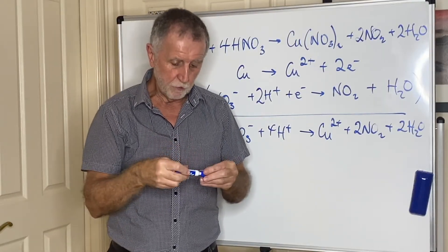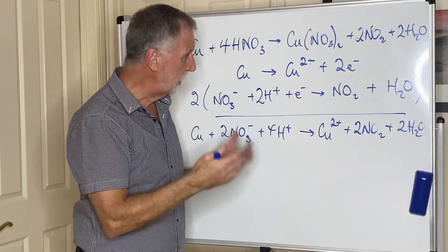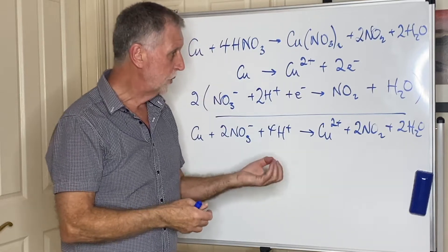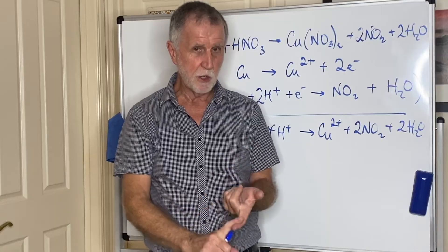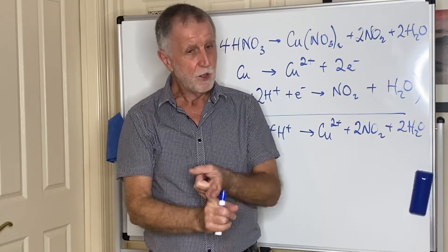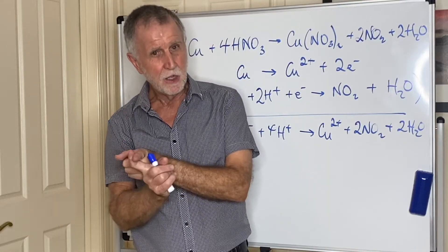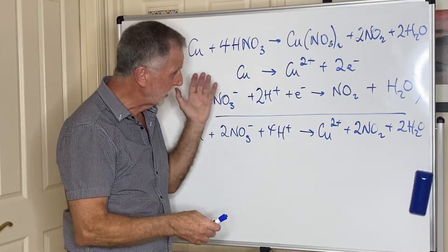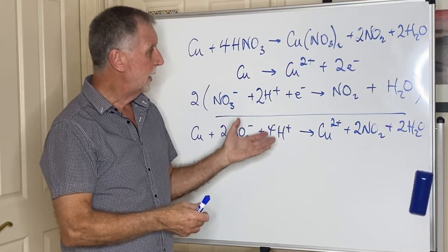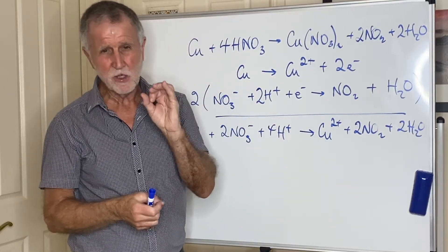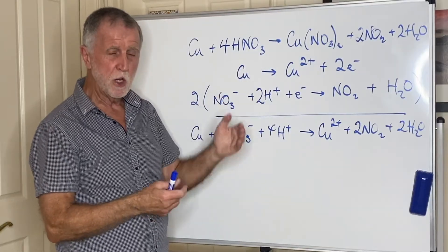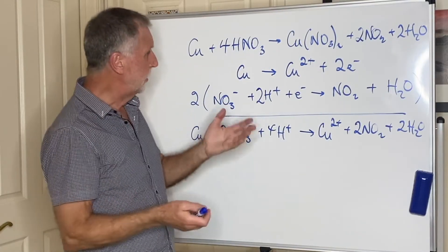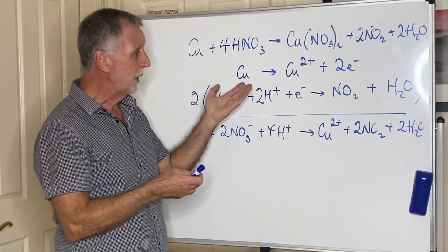If you are asked to write equations for reactions, your first step is the data book, page 10. If the equation isn't there, you'll have to derive it as I've just shown. It's unheard of for them to give you two equations that you have to work out yourself — you can pretty much guarantee one will be given, but you may have to do the other one yourself.